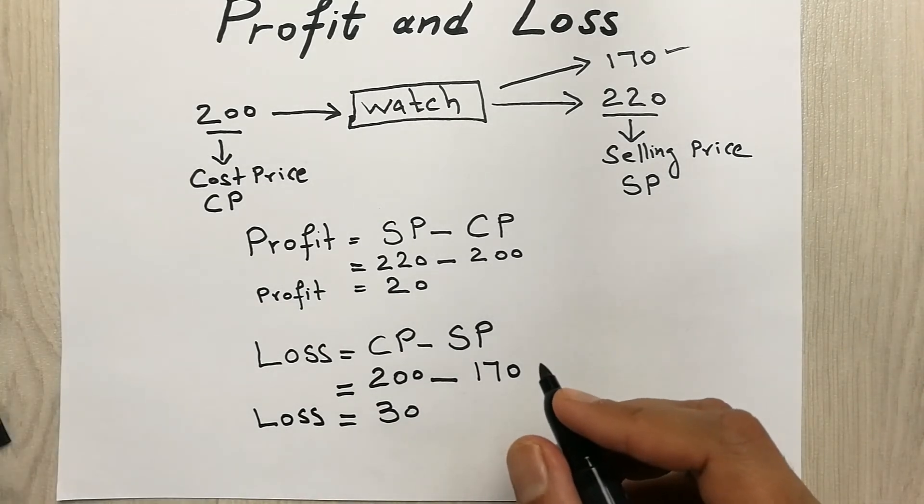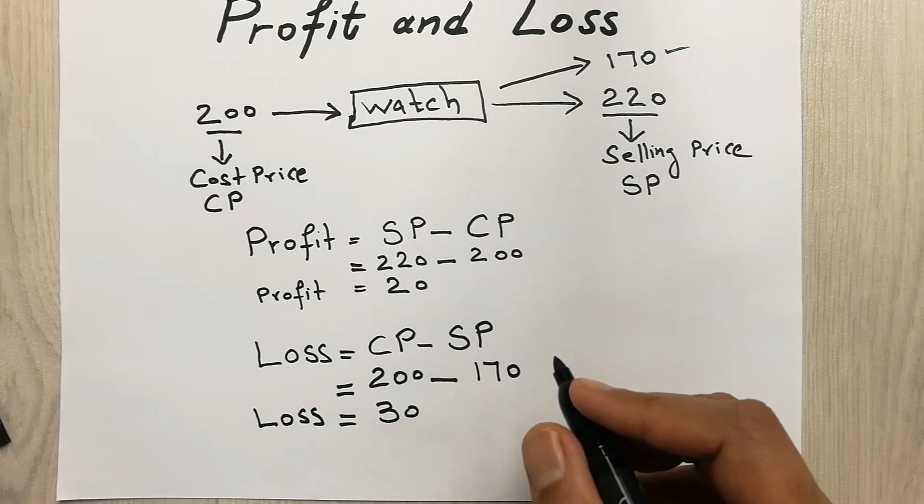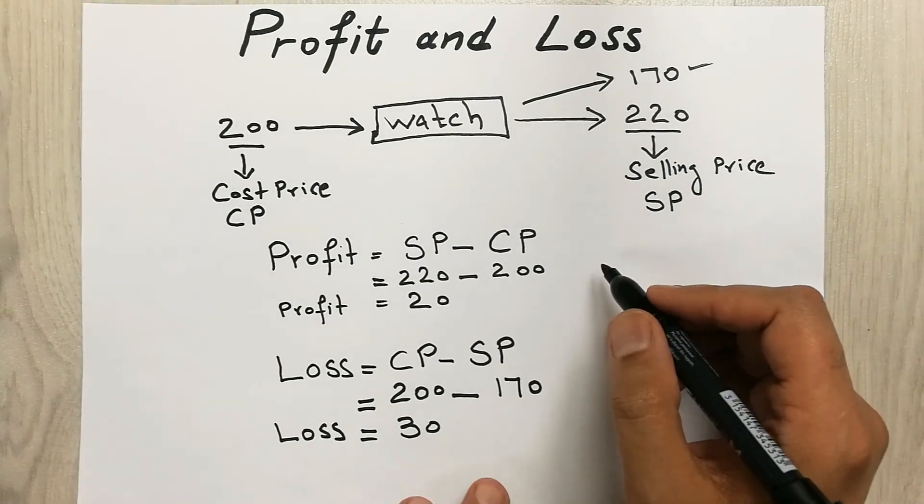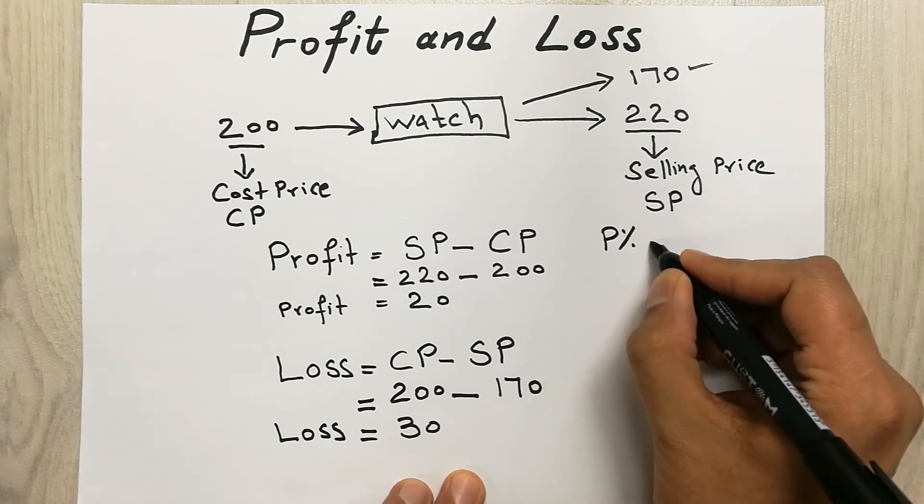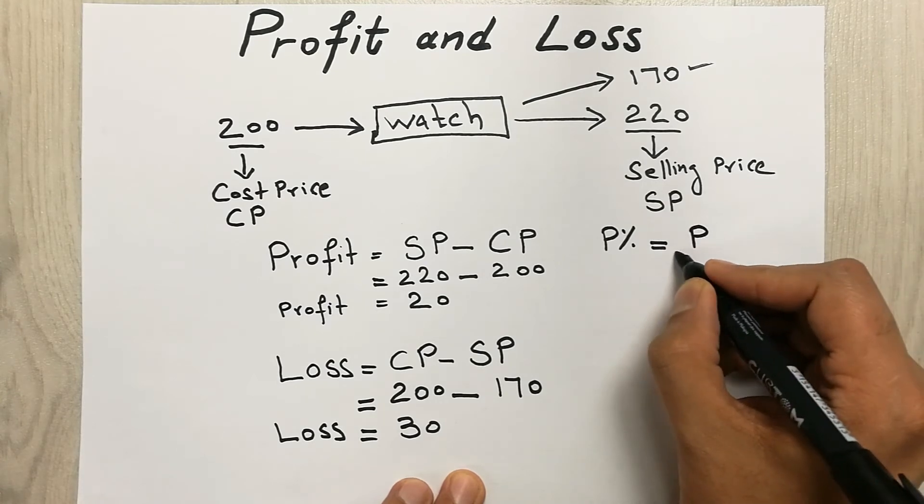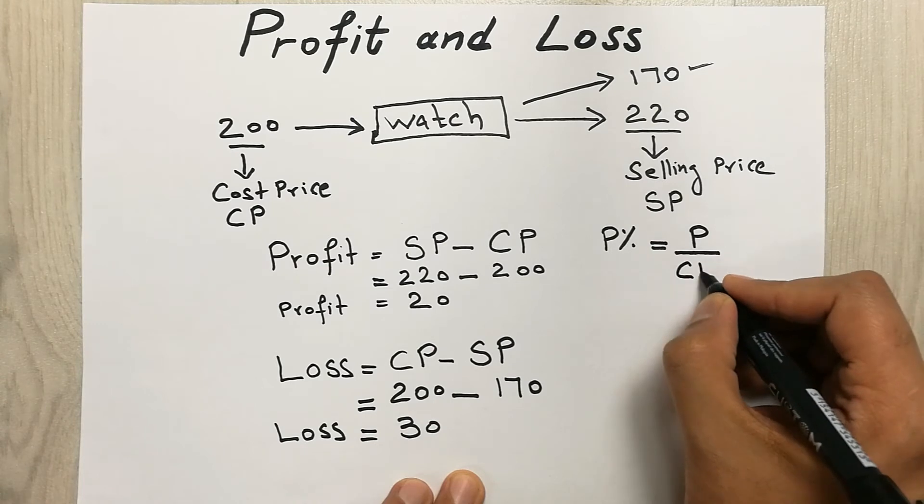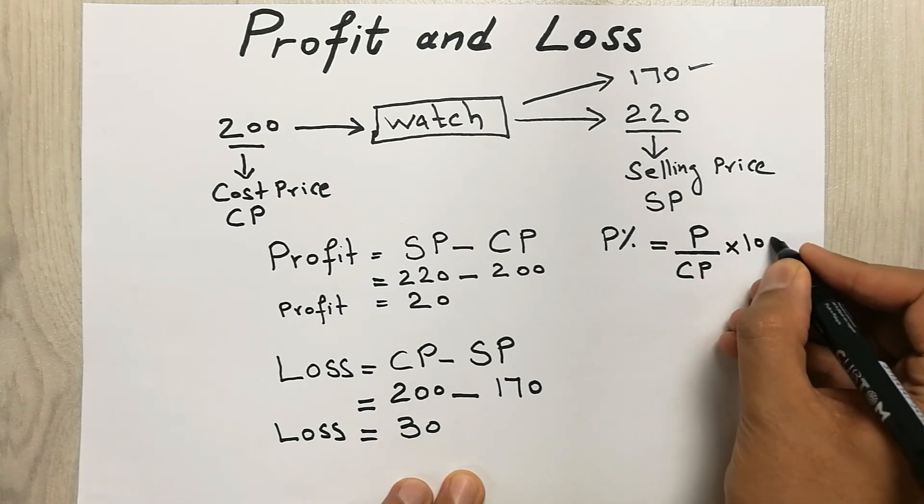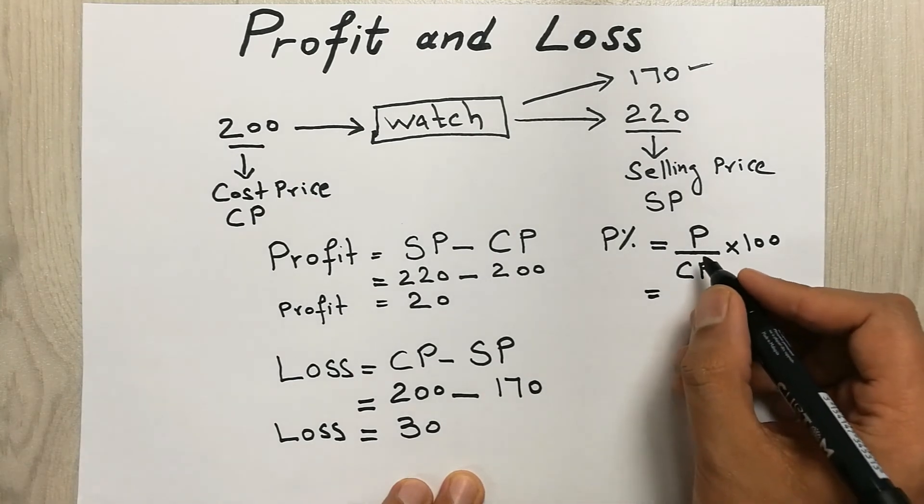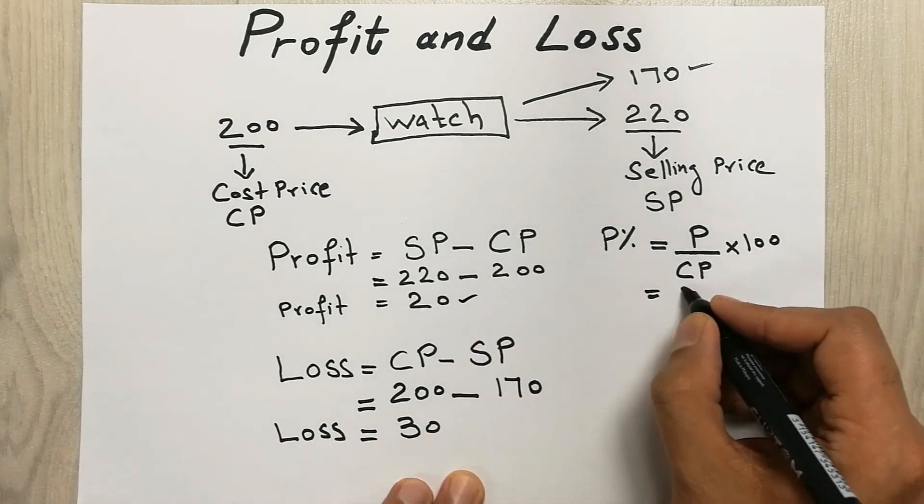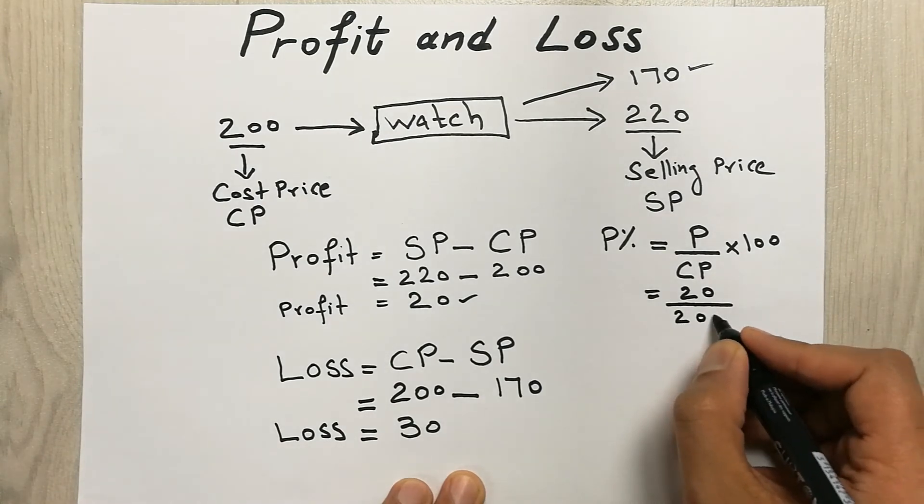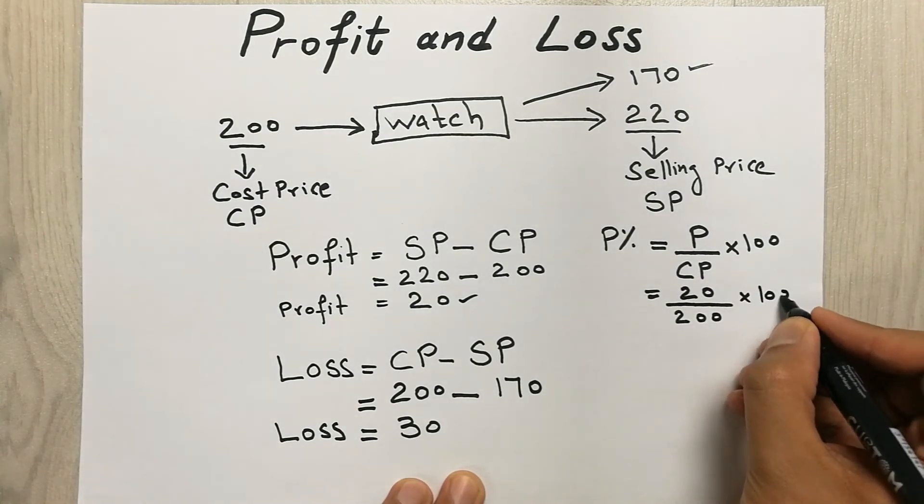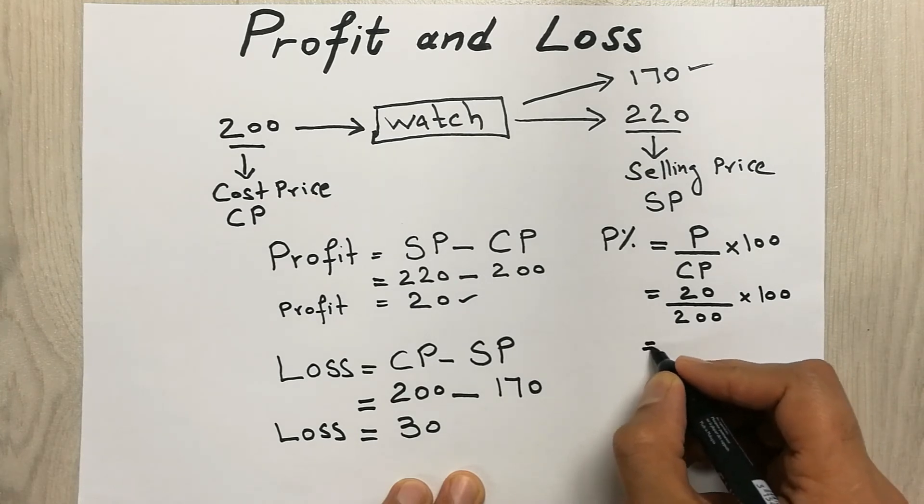So guys now I will move to the second part in which we're going to find out the profit percentage and loss percentage. The formula for profit percentage is P percent equals to profit divided by cost price multiplied by 100. So now we will put the values over here. Our profit here was 20, our cost price was 200, and then we multiply with 100.